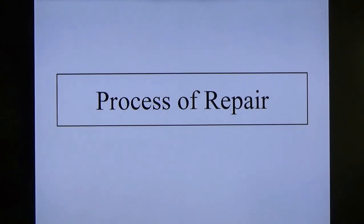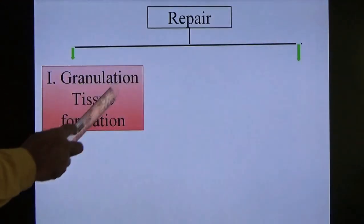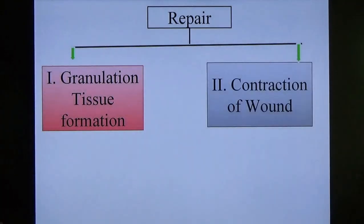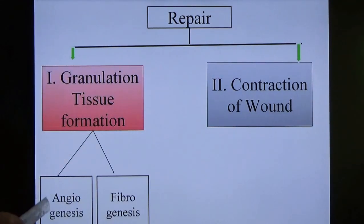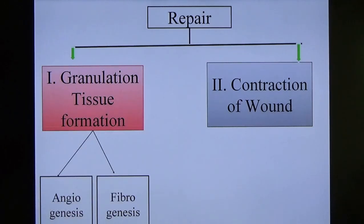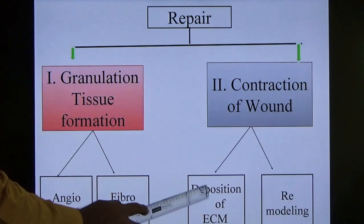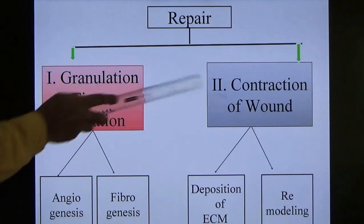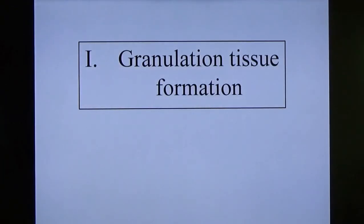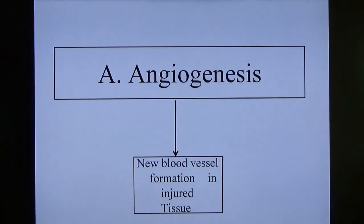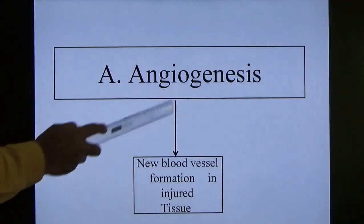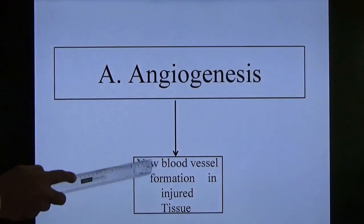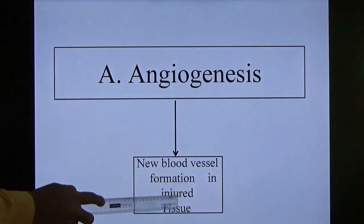Process of repair can be explained by two processes: one is granulation tissue formation, another is contraction of the wound. Granulation tissue formation involves two steps: angiogenesis and fibrogenesis. Angiogenesis — angio means blood vessels, genesis means new formation — so it means new blood vessel formation in the injured tissue.